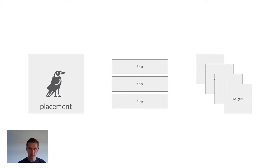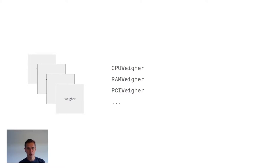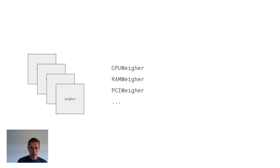Those three components — weighers, filters, and placement — are how we're going to look at the LibVirt driver and the implications of using it from a scheduling perspective. Starting with weighers: there isn't actually a whole lot to say. The LibVirt driver doesn't really have any special bearing on weighers, because weighers don't exclude hosts — they simply illustrate a preference for any given host. A bad misconfiguration of weighers will typically result in poor scheduling decisions, but it won't result in a 'no valid host' case.